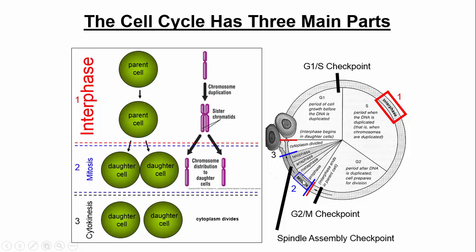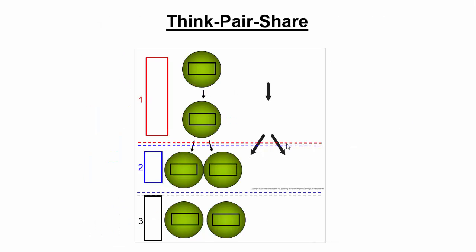The second stage is mitosis, where the cell actually divides. There are four phases of mitosis: prophase, metaphase, anaphase, and telophase. We'll talk about those in a moment. The last part of the cell cycle is cytokinesis, where the cytoplasm divides. Some people incorporate cytokinesis into mitosis, but technically it's its own phase. It's the shortest phase — just the point at which the membranes of the two daughter cells pinch apart. And that's the full cell cycle.